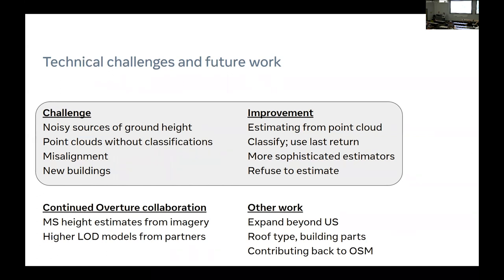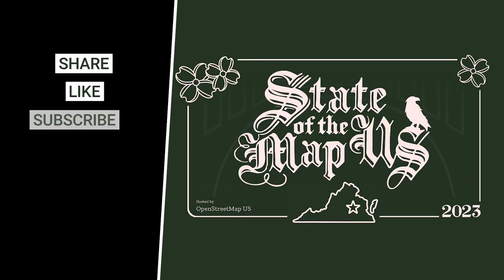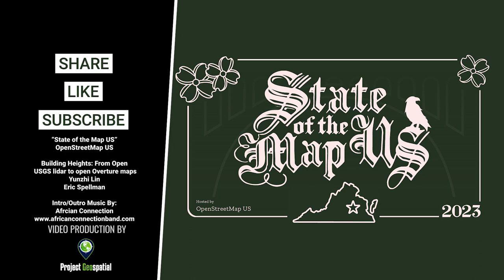Q: How does this handle a building that's one or two stories for most of it but has a clock tower attached that's eight stories tall? A: We deliberately tried to follow the OpenStreetMap spec — the wiki says you take the highest point. This is not going to be visually ideal; when you extrude the footprint up to the clock tower height it looks wrong. There are ways of handling this in OSM with building parts, and that's what Yunjie was referring to in our hope of segmenting — we just haven't done it yet.